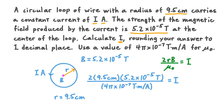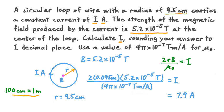We're just about ready to calculate I, but first let's convert the radius from centimeters into meters to match the SI base units. 9.5 centimeters is 0.095 meters. When we calculate I to one decimal place, we find a result of 7.9 amperes. Since the problem tells us the current is I amperes, our final answer for I is just the number 7.9.